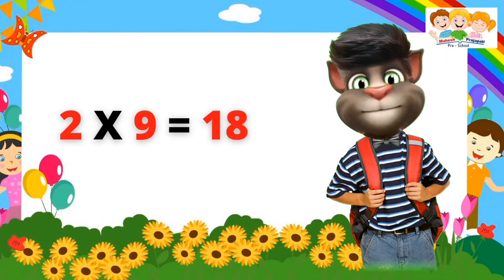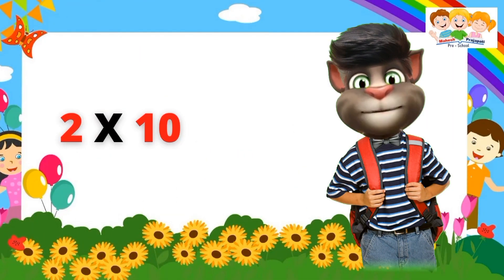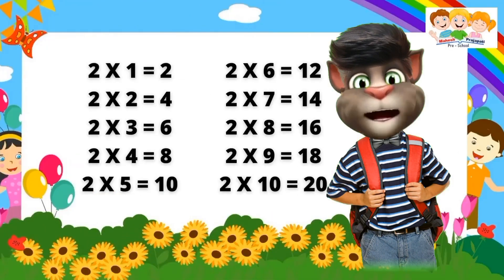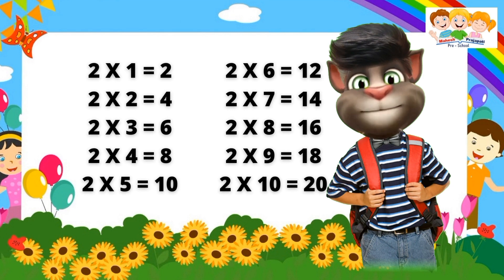Two nines are eighteen. Two nines are eighteen. Two tens are twenty. Two tens are twenty. Two ones are two. Two twos are four. Two threes are six. Two fours are eight. Two fives are ten. Two sixes are twelve. Two sevens are fourteen. Two eights are sixteen. Two nines are eighteen. Two tens are eighteen.